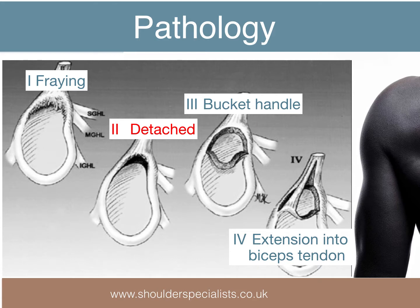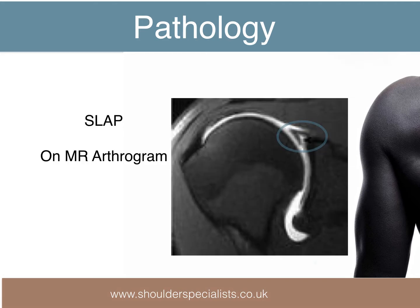SLAP is an acronym for superior labrum, anterior to posterior — i.e. the superior labrum is damaged from front to back. Type 1 is a frayed labrum. Type 2 is detached, and is the commonest type. Type 3 is detached with the bucket handle section. Type 4 extends into the long head biceps tendon. These are visualised best on an MR arthrogram.